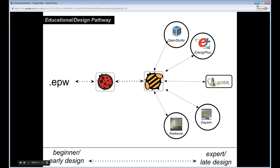Both Ladybug and Honeybee are open-source projects, and everything in them is written in Python. That was chosen specifically because it's a language that a lot of people — especially designers — already know. We want to make it as open as possible: if you know Python, you can edit the code and create very customized things for your projects. And if you want to understand what's going on under the hood, it's all there for you to see.